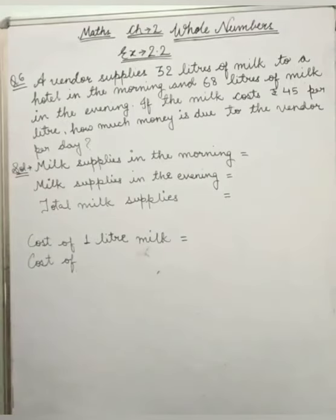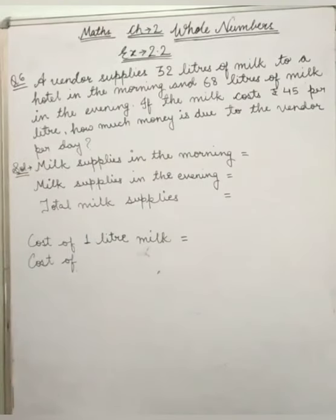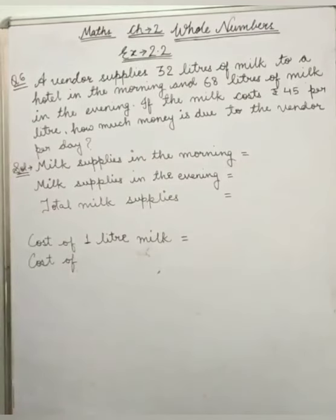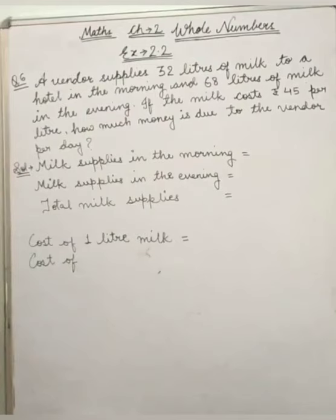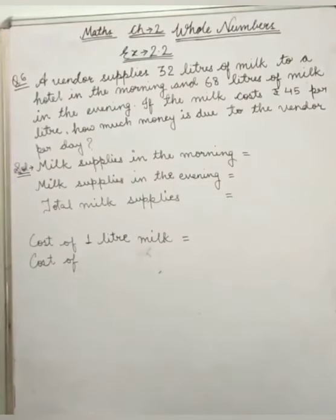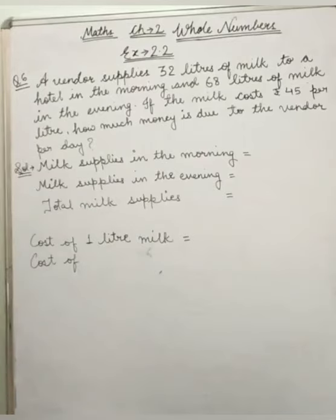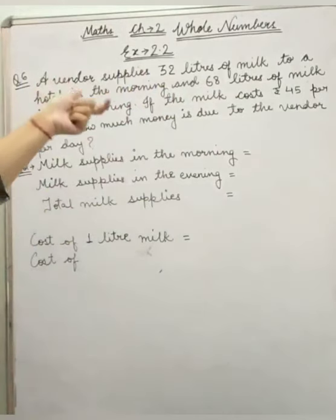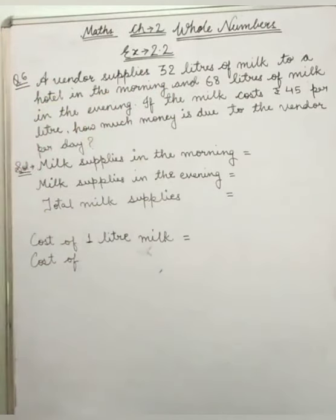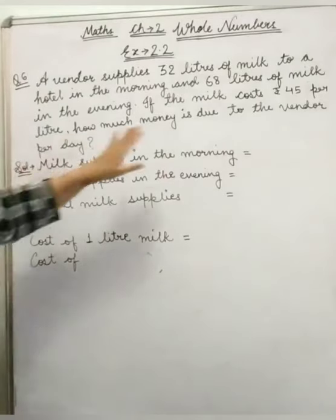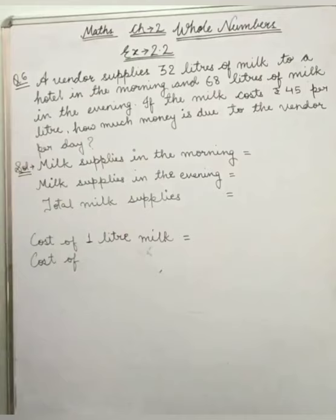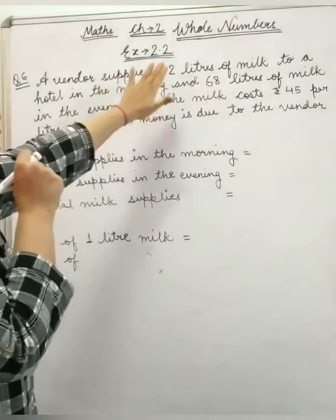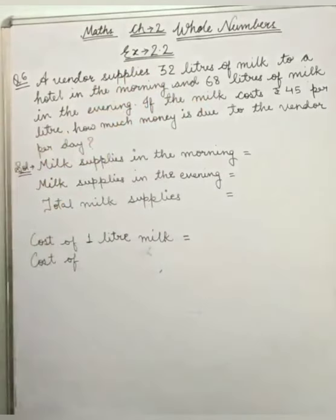Now question 6. A vendor supplies 32 liters of milk to a hotel in the morning and 68 liters of milk in the evening. If the milk cost Rs.45 per liter, how much money is due to the vendor per day?